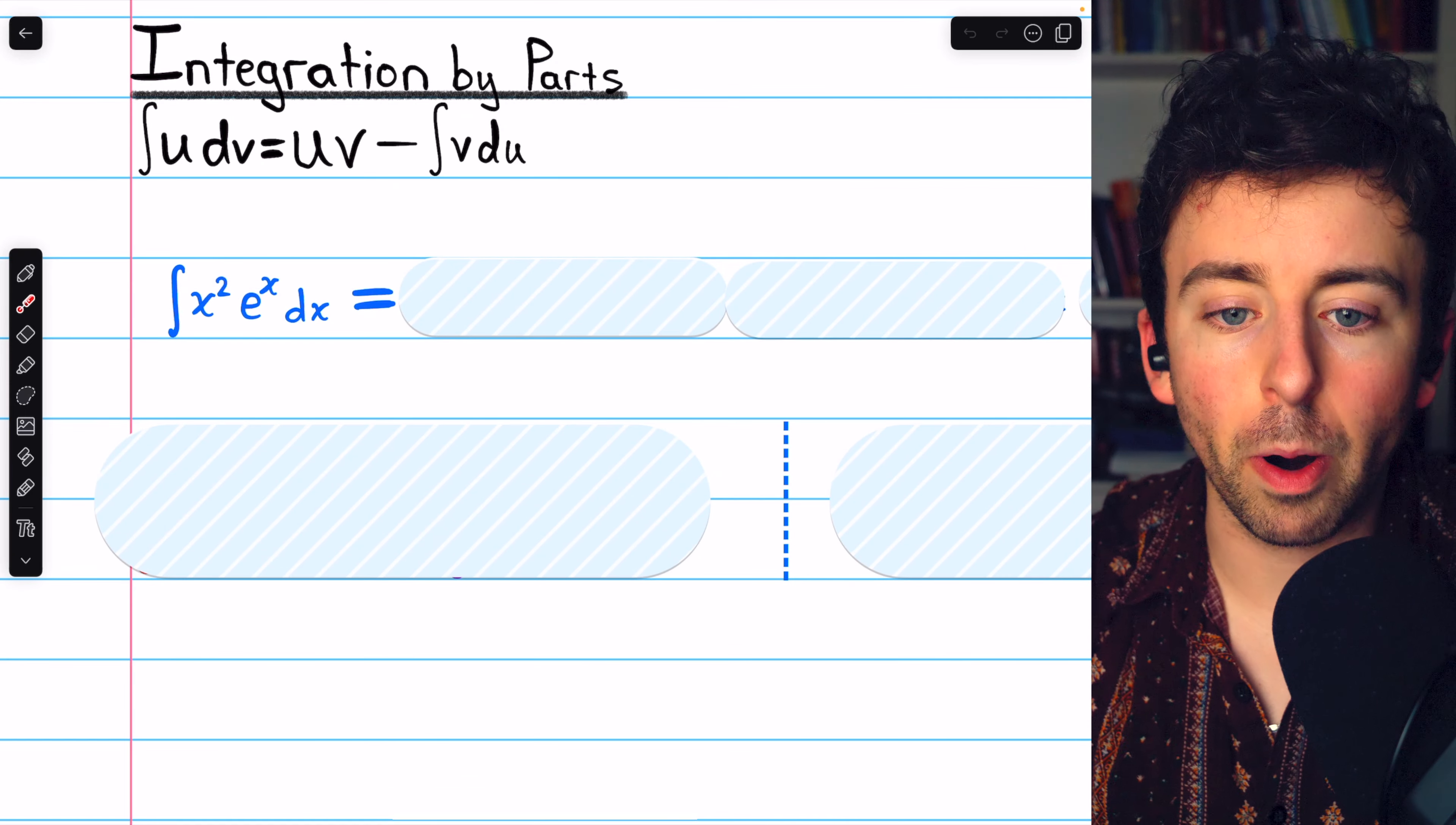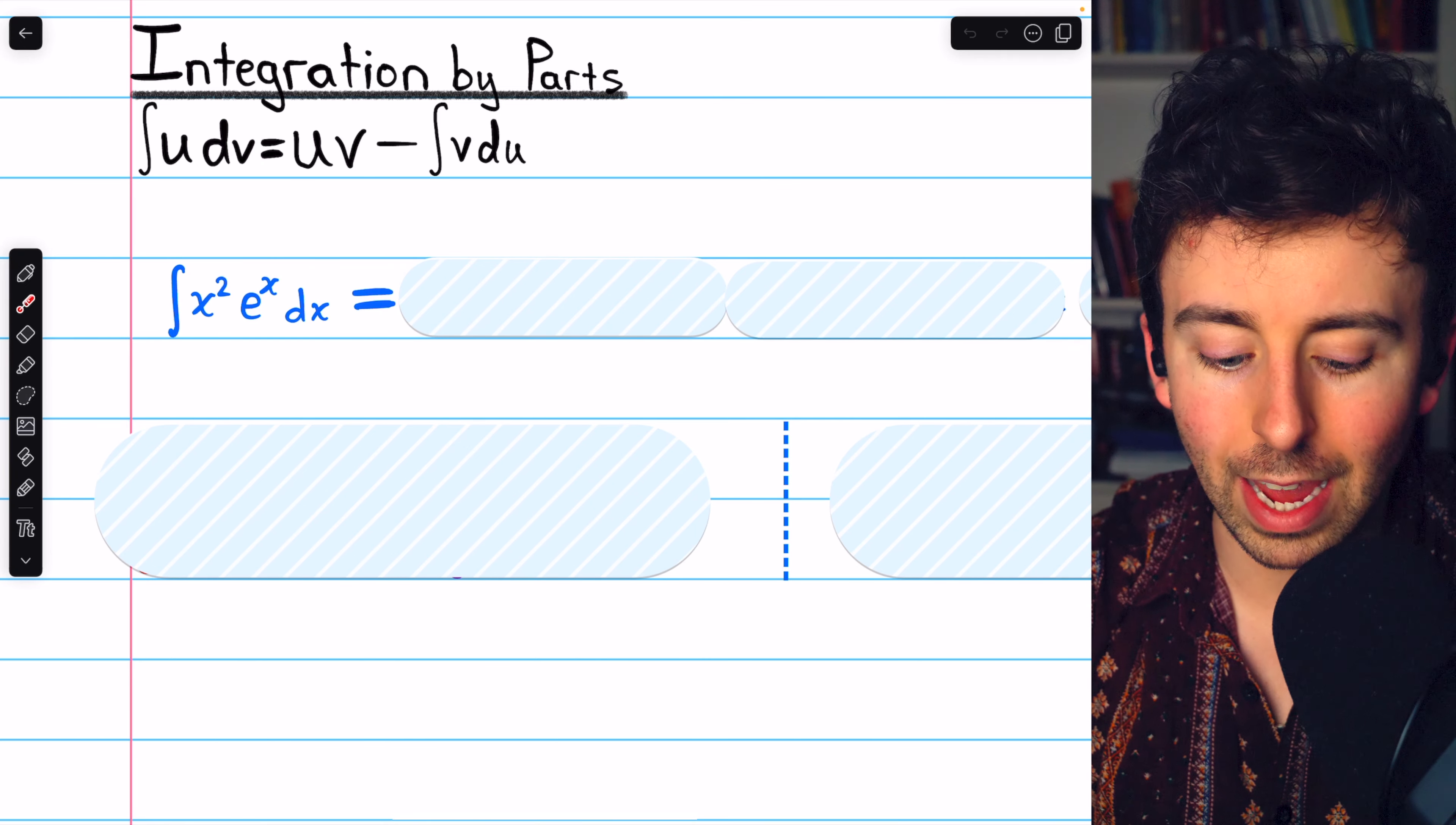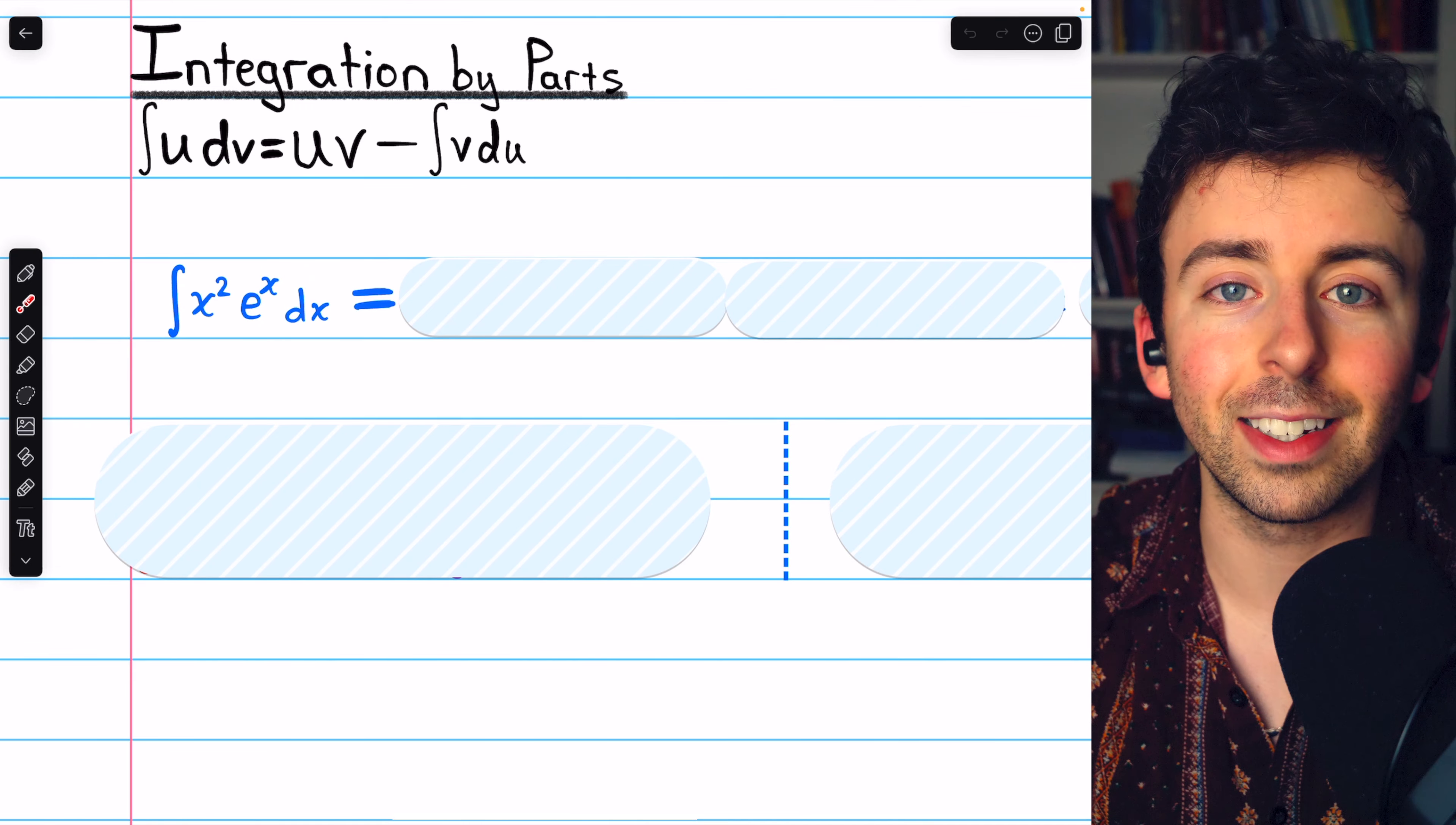To use integration by parts, we need to pick something from our integrand to be u and something to be dv. Typically, for u, we pick something that gets simpler when we differentiate it. A great candidate here is x squared. The derivative of x squared is 2x, so that will work out pretty well. Then e to the x dx can be dv, and that's very easy to integrate.